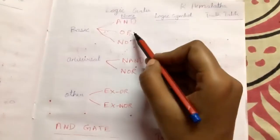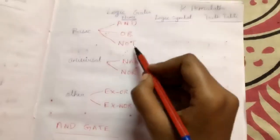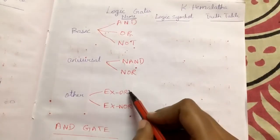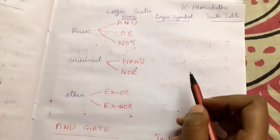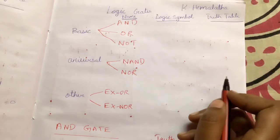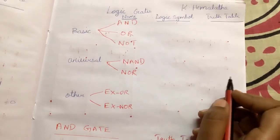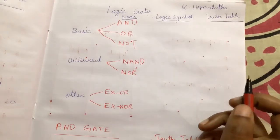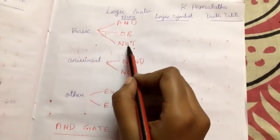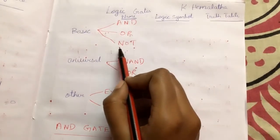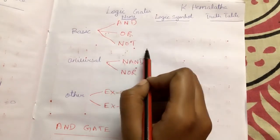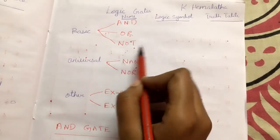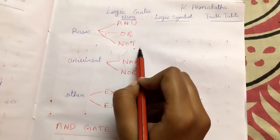The AND operator, OR operator, NAND operator, NOR operator, EXOR operator — all these operators have N number of inputs and you will be getting only one output, except the NOT gate. The NOT gate has only one input and one output. That is the NOT gate representation.